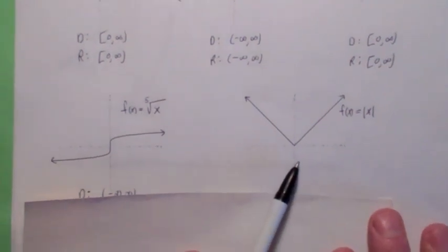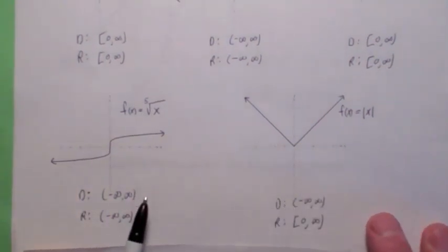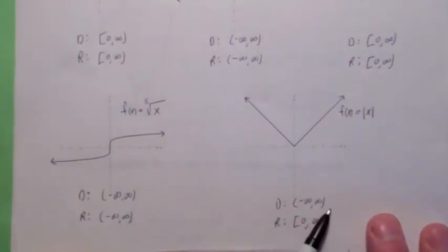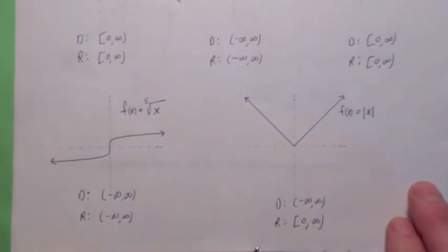The absolute value function is going to come up. What's the domain and range of that? Domain is negative infinity to infinity. And the range is 0 to infinity. So you should know that one as well.